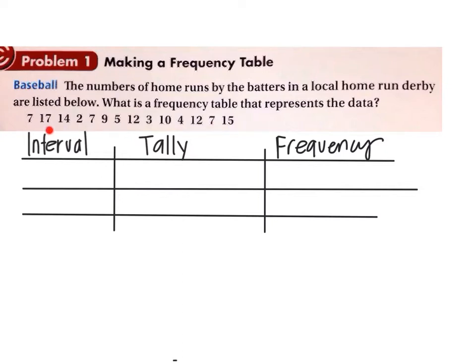First thing, let's look at our data set. We've got to look at the lowest data point and the highest data point. For this one, it's 2 and 17. What we're going to do is make intervals for our data, and these intervals can be different for every single person in the class, but you have to make it where it makes sense.